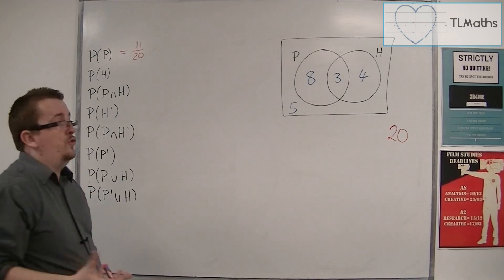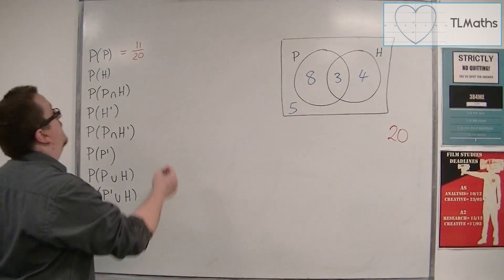If we're looking at history, then we have 3 plus 4, so 7 out of 20.